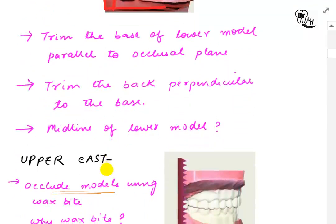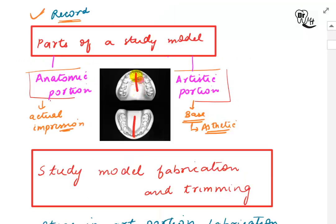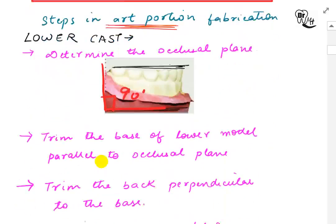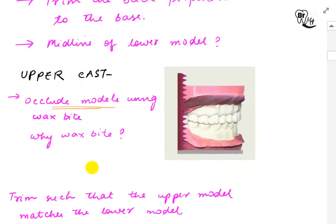The midline of the lower model should correspond to the midline — the mid-palatine raphe — of the upper model. For the upper cast, we occlude the models using the wax bite. We use the wax bite to occlude them and maintain the correct inter-occlusal relationship.